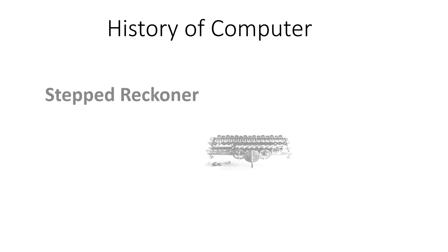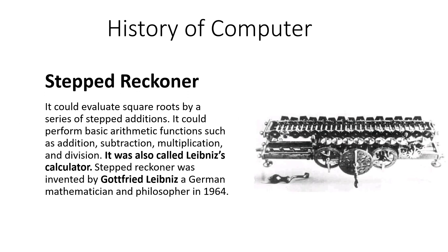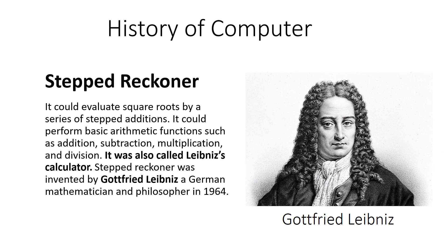The next device in the history of computing was the Stepped Reckoner. The Stepped Reckoner was able to evaluate square roots by a series of stepped additions. It could perform basic arithmetic functions such as addition, subtraction, multiplication and division. That is why it is also called the Leibniz Calculator, because it was developed by Gottfried Leibniz, a German mathematician and philosopher, in 1674.